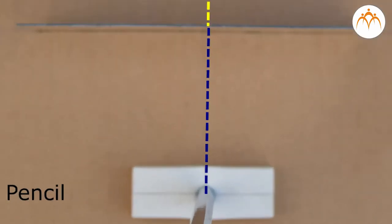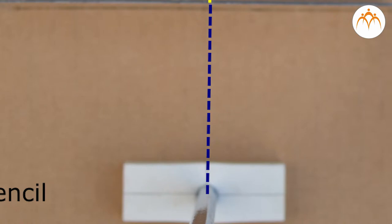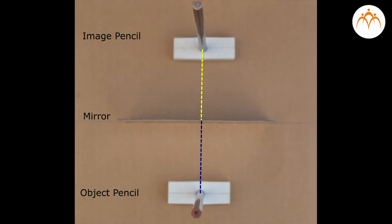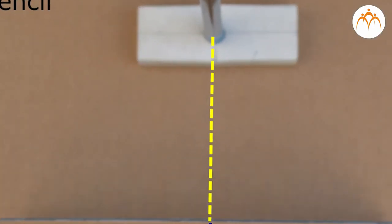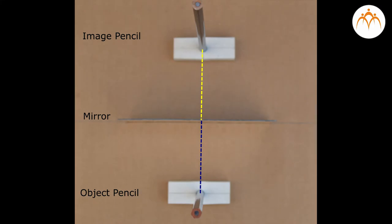The distance from mirror to object is known as object distance. The distance from mirror to image is known as image distance. For all plane mirrors, object distance is the same as image distance.